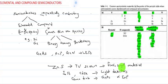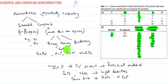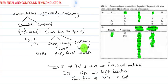An example of a ternary compound semiconductor is gallium arsenide phosphide. An example of a quaternary compound semiconductor is indium gallium arsenide phosphide. These are the various classifications of semiconductors according to their nature of atoms.